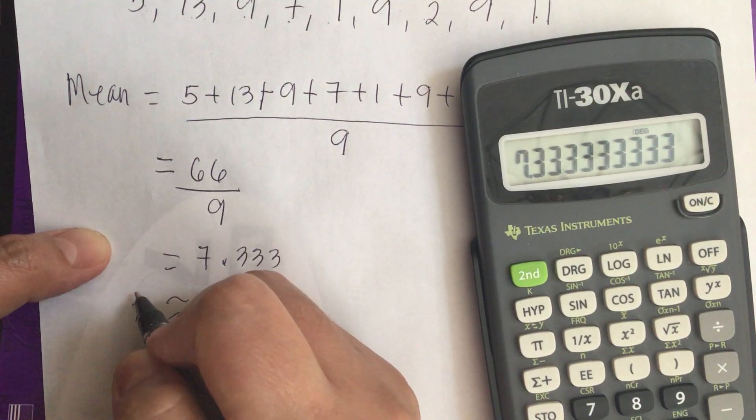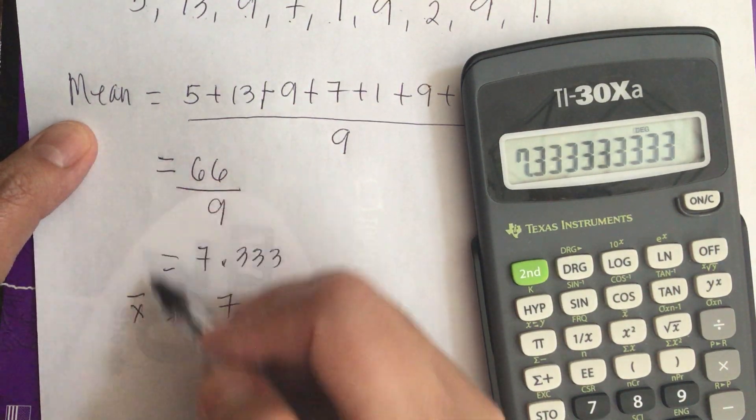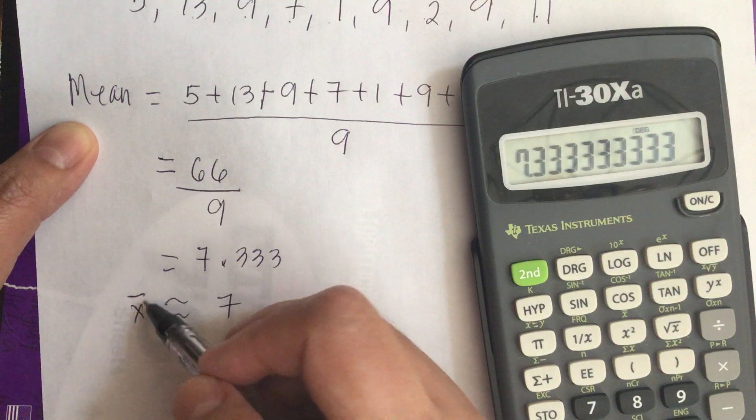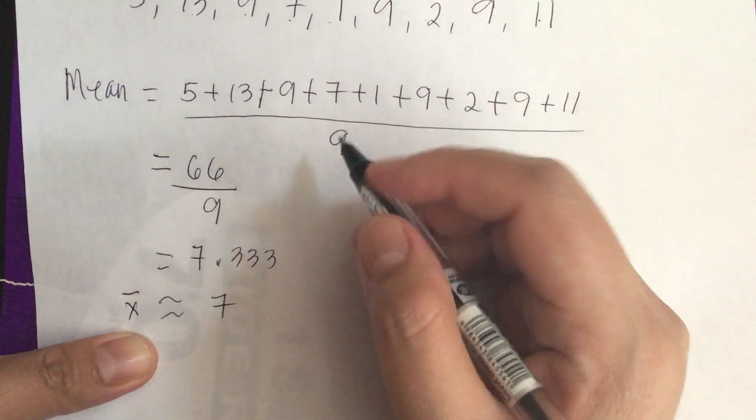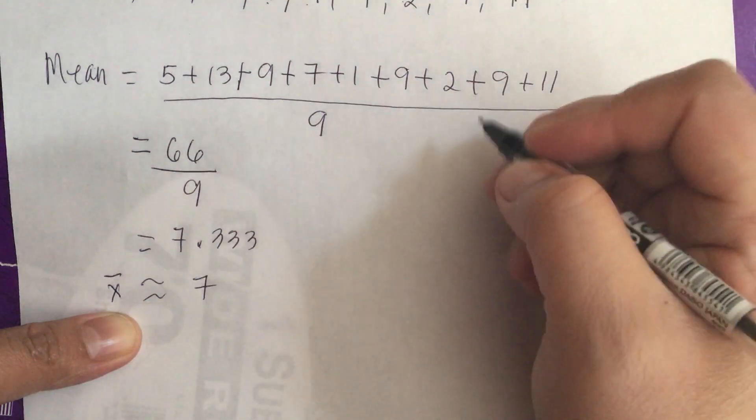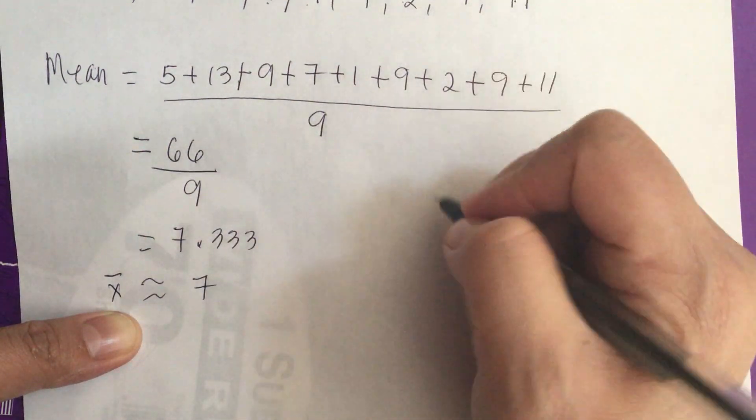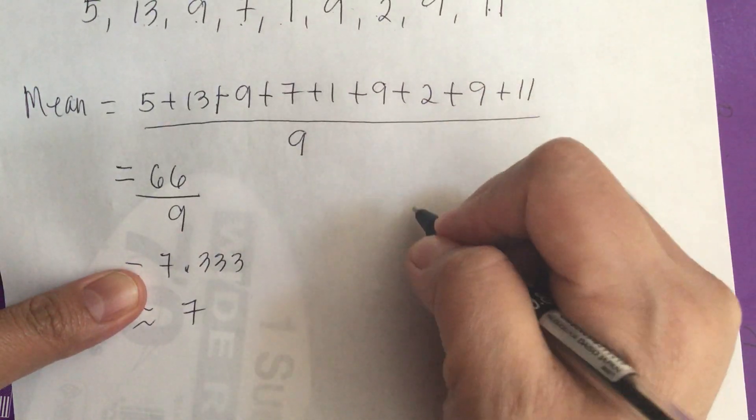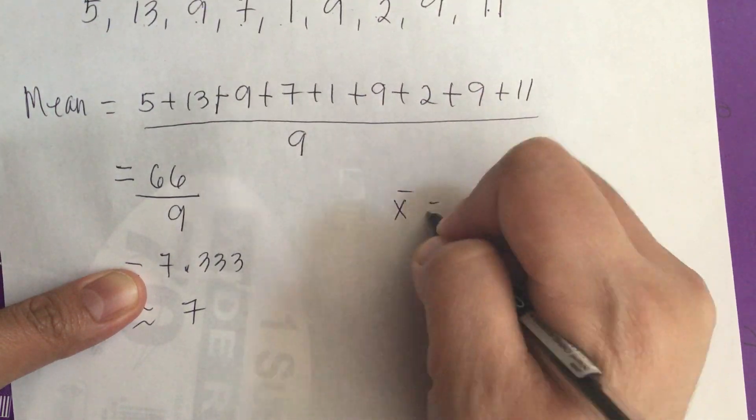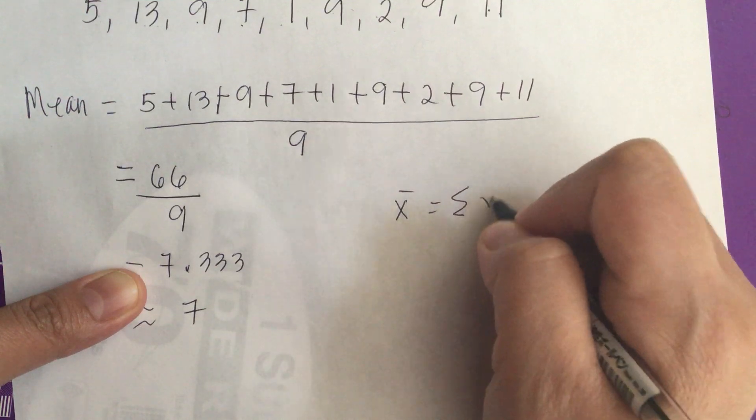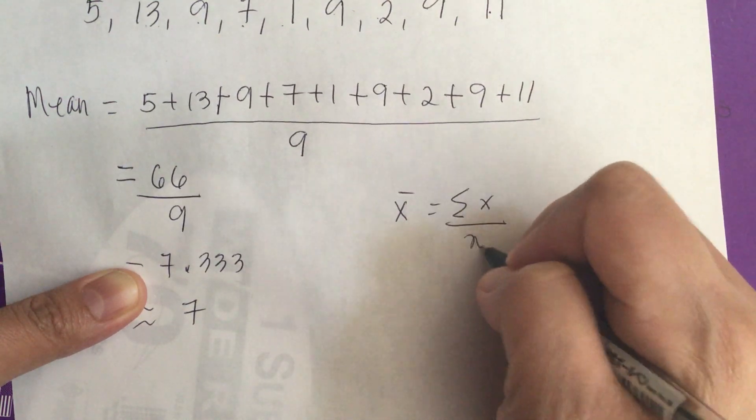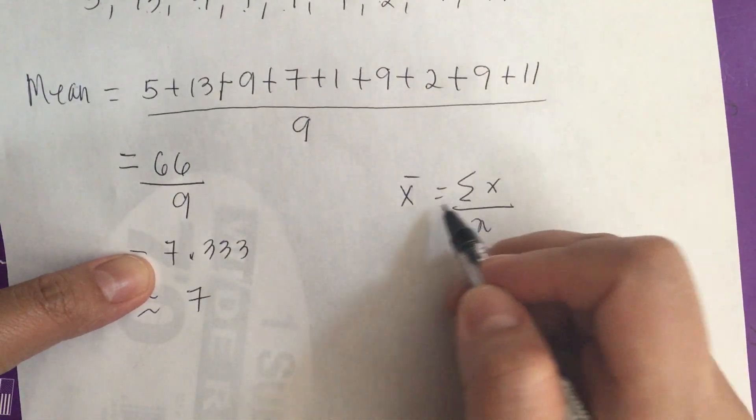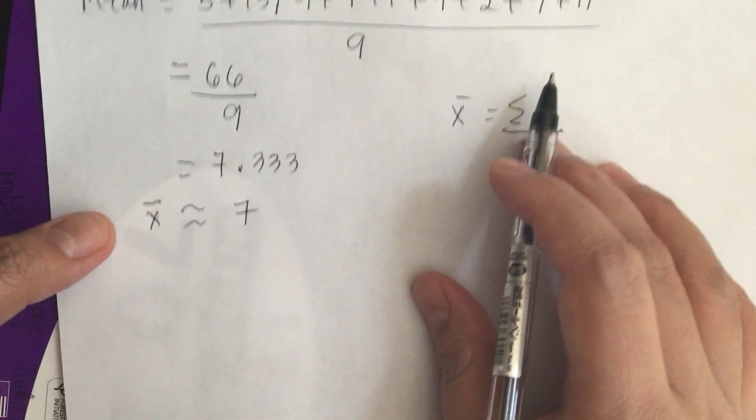Divide 9 is equal to 7.333, or this is approximately 7. We usually denote mean is equal to x with a bar on top. In general, the formula for mean is the sum of x all over n, or the number of data. This is the formula for mean.